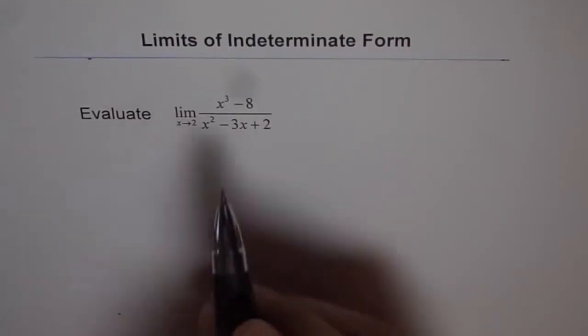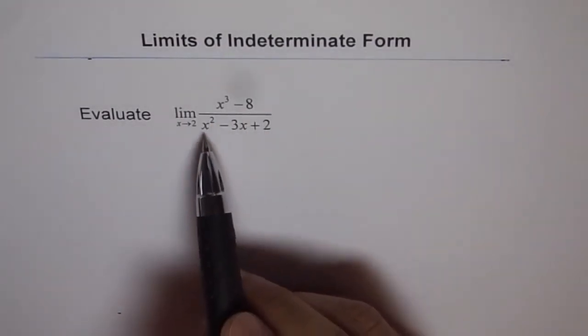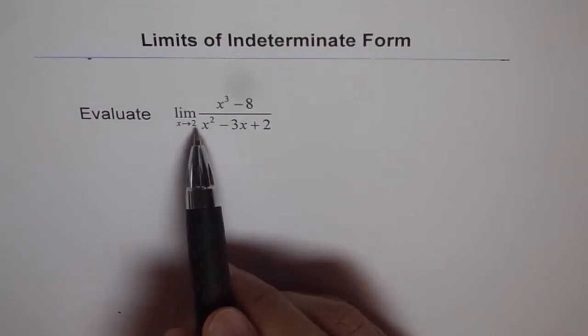Evaluate the limit of the function x cubed minus 8 divided by x squared minus 3x plus 2 as x approaches 2.